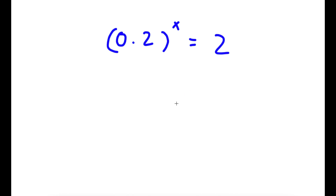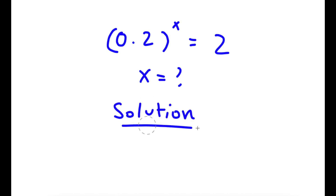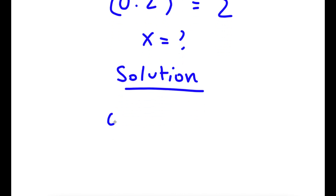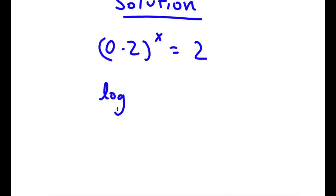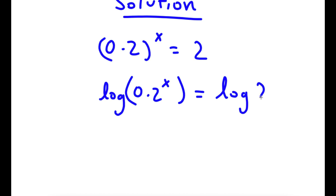In this problem, I have 0.2 to the power of x is equal to 2. I want to find the value of x. For my solution, I start with 0.2 to the power of x is equal to 2. Now I'm going to take the log on both sides, so I have log 0.2 to the power of x is equal to log 2.